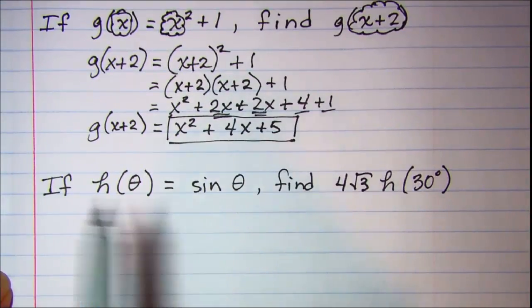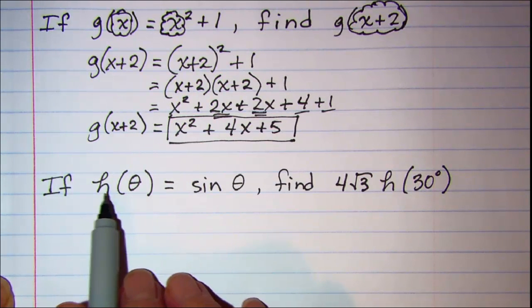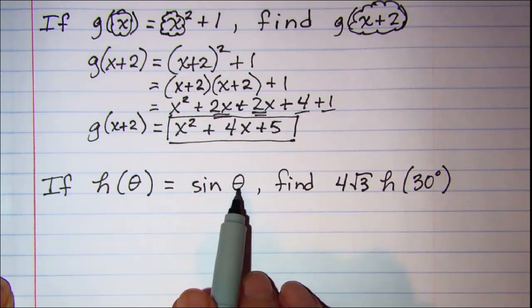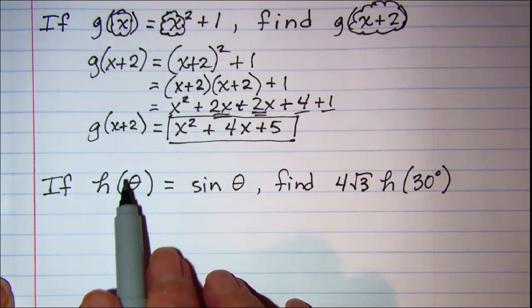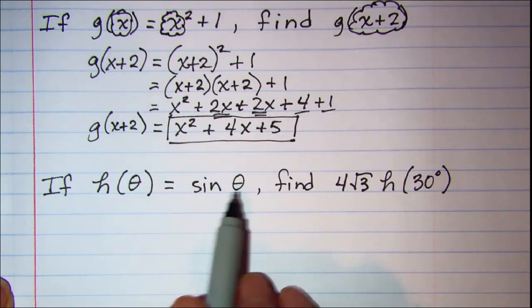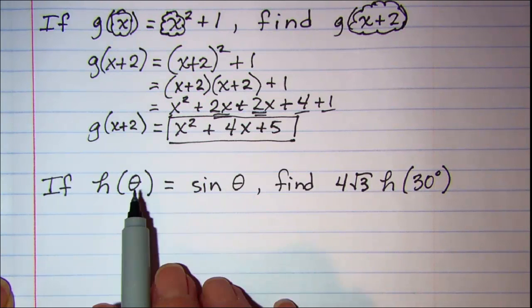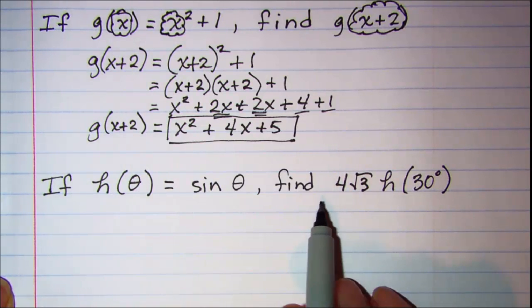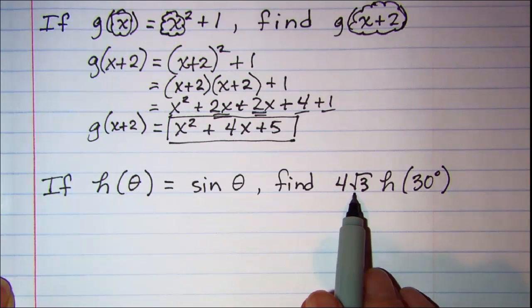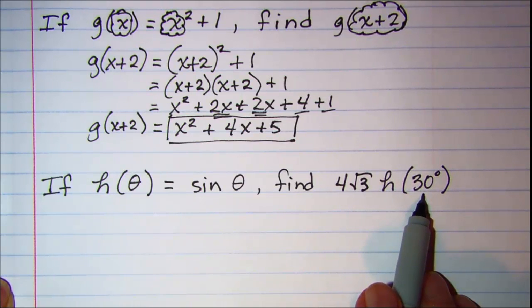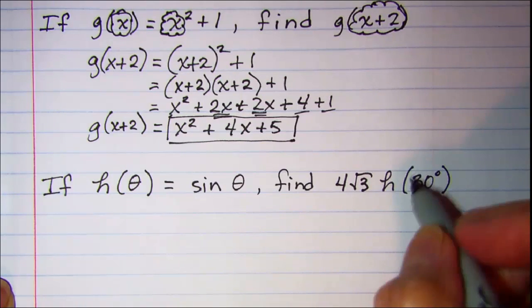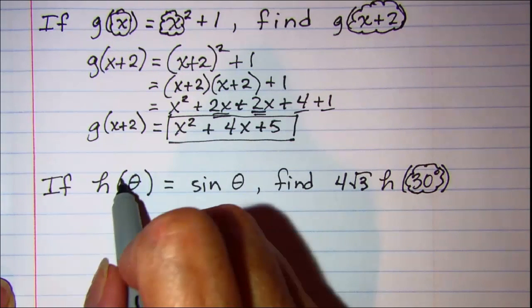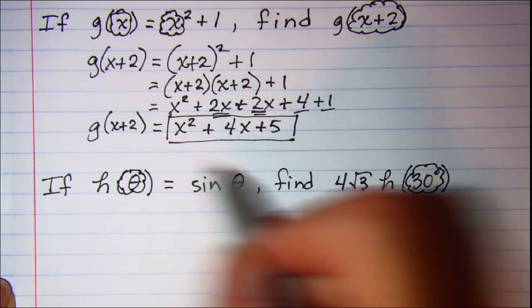Our last example, we're told that our function is h(θ) and it equals sin θ. Notice on this one our independent variable is theta and our function name is h(θ). And we're asked to find 4√3 times h(30).